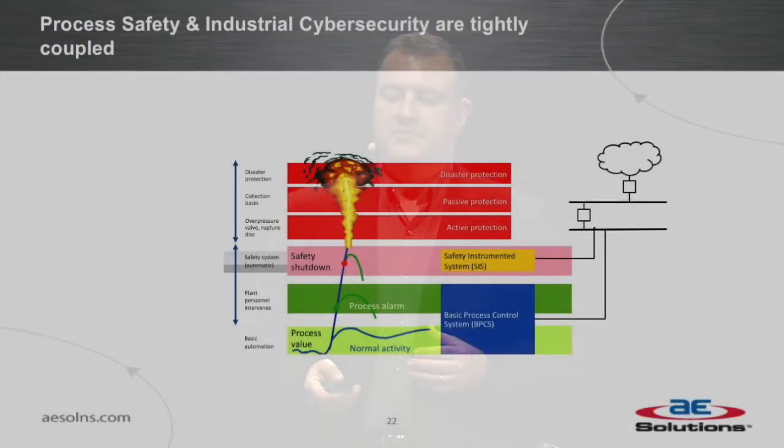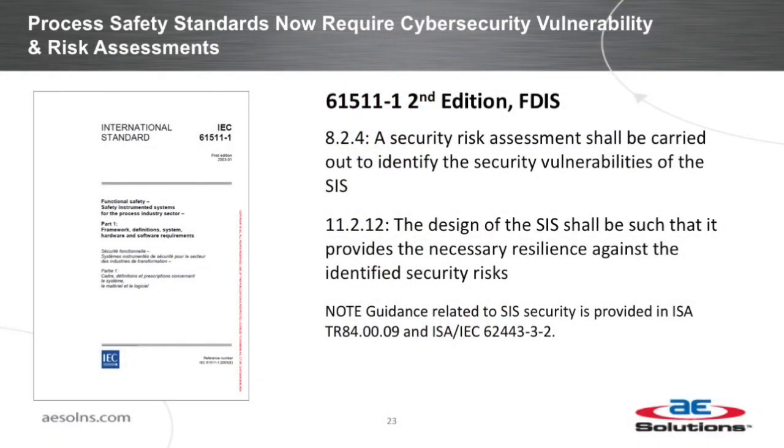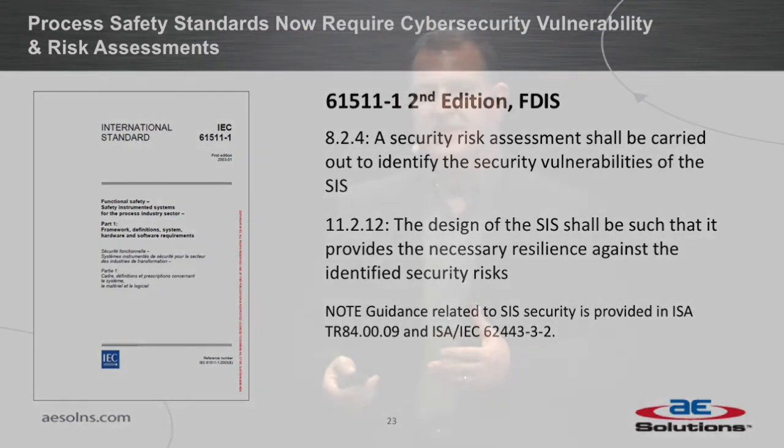Going back to the earlier diagram, we have the basic control system and the safety system, but in reality today those are oftentimes networked together with common HMIs, common engineering workstations, and common networks. So it's possible that a single threat actor could potentially attack both the control and the safety system — either initiating an event or preventing a safety action from bringing the process to a safe state. The safety standards have also recognized this — IEC 61511 is the predominant one for functional safety, and the latest version does recognize that a security risk assessment needs to be carried out because safety assessments are limited to random or systematic failures, not cyber and not deliberate. The design of safety systems now needs to provide resilience against cyber threats as well.